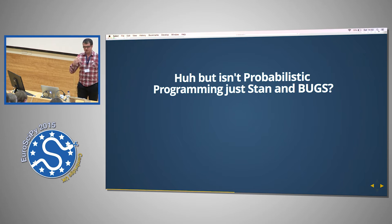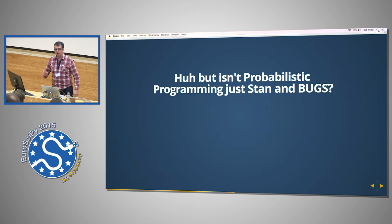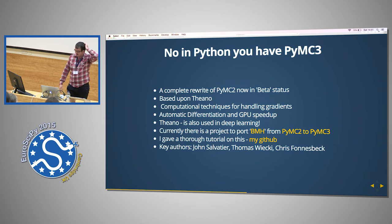Of course, when I first heard about probabilistic programming, I heard about Stan, and bugs, and all these specialised languages that people use. Thankfully, someone went ahead and did this in Python. So you have PyMC3, which went beta a few months ago. I gave a tutorial on this stuff at PyData London, and they went beta at that point. It's based upon Theano. I'm not going to go into too much detail about this, but Theano is a really interesting computational framework. You've got things like automatic differentiation, you've got GPU speed up. It's also used in deep learning.